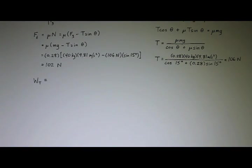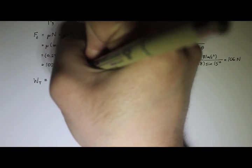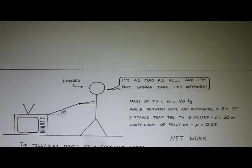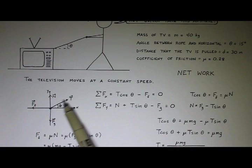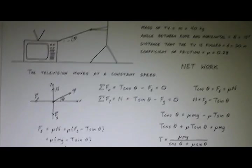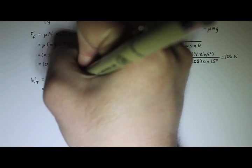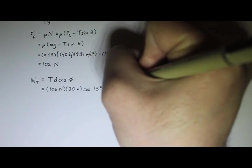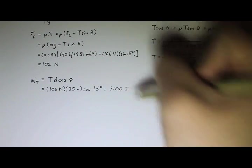I'm ready to calculate some of the works. The work done by tension: the formula for work is the force — in this case tension — times the magnitude of the displacement d, times the cosine of the smaller angle between the tension force and the displacement. The tension force is at an angle and the displacement is along the x direction, so the angle between them is theta, which is 15 degrees. Work done by tension is 106 N × 30 m × cosine 15° = 3,100 joules.